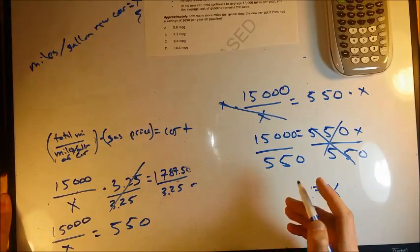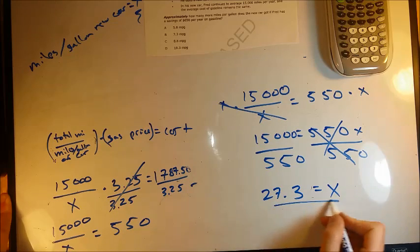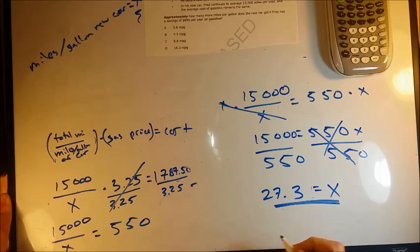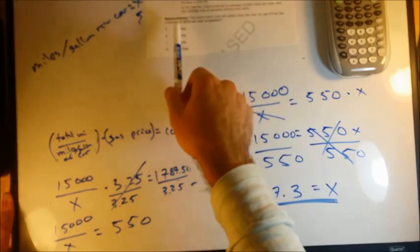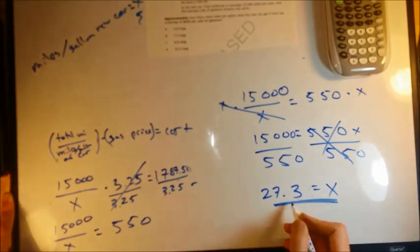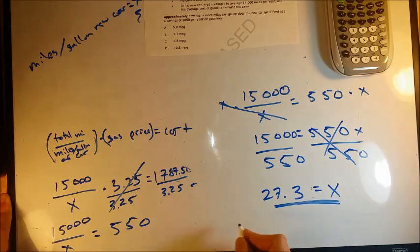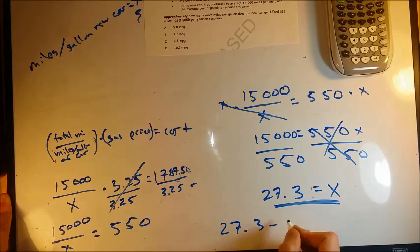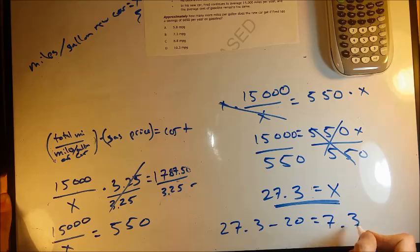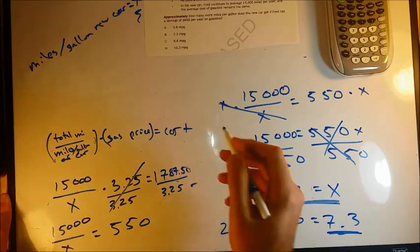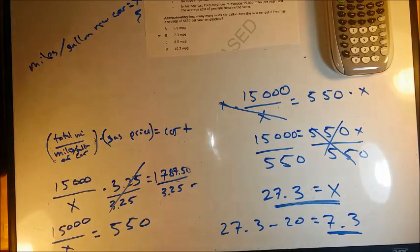So x is 27.3 miles per gallon — that's the new car's fuel efficiency. The question asks how many more miles per gallon the new car gets. So 27.3 minus 20 equals 7.3 miles per gallon more. That gives us answer choice B.